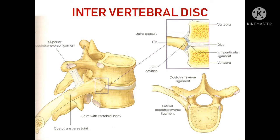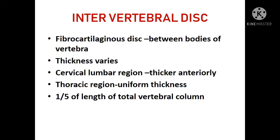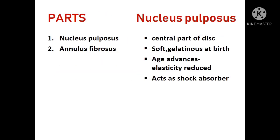Between the bodies of the vertebrae, a disc-shaped structure called the intervertebral disc is present. It is a fibrocartilaginous structure. The thickness varies between different regions of the vertebral column as well as within a single intervertebral disc. In the cervical and lumbar regions, it is thicker on the anterior aspect; in the thoracic region, it is uniform in thickness. It occupies about one-fifth of the total length of the vertebral column. The intervertebral disc has two parts: nucleus pulposus and annulus fibrosus.